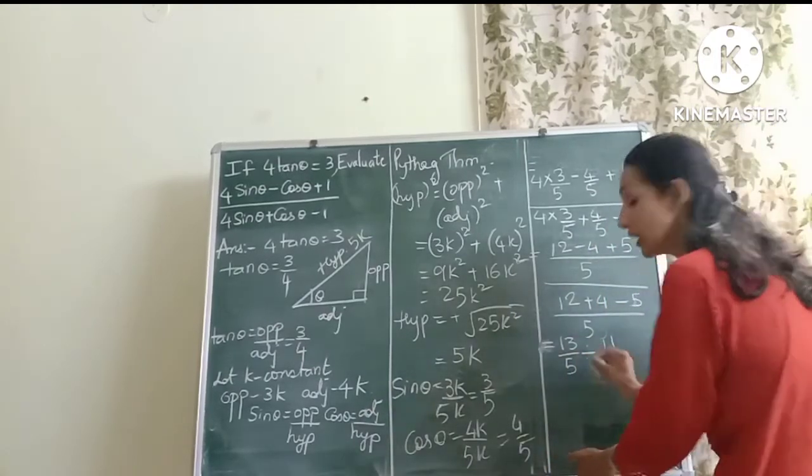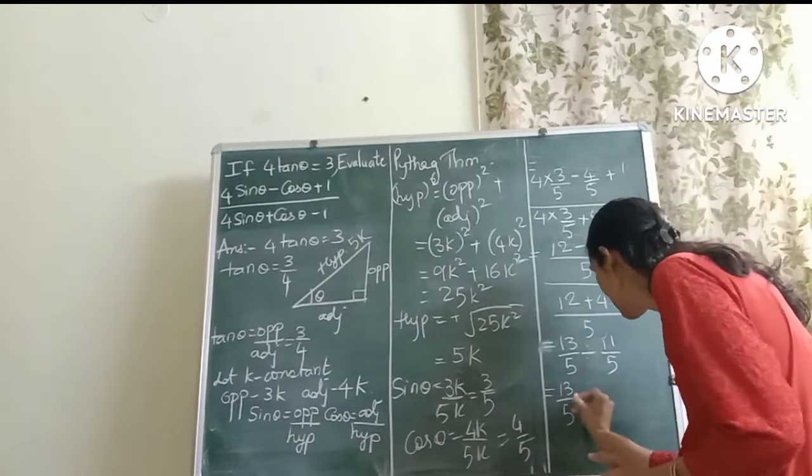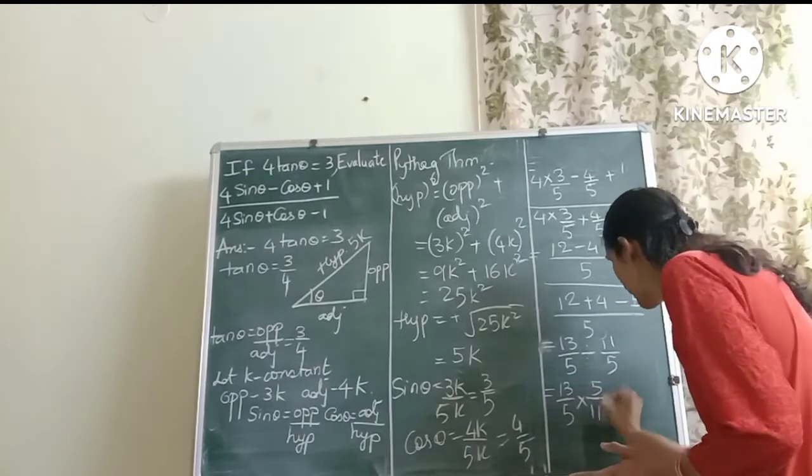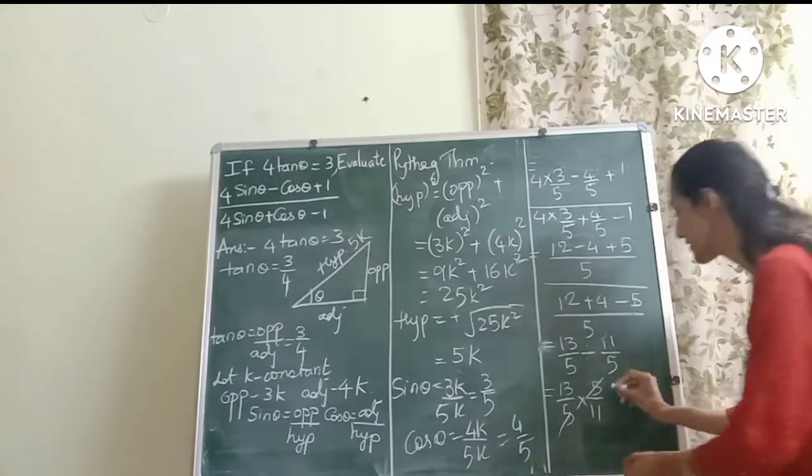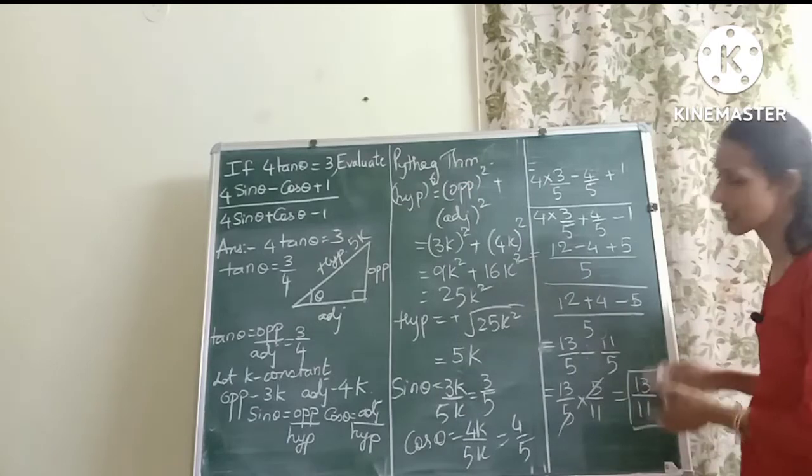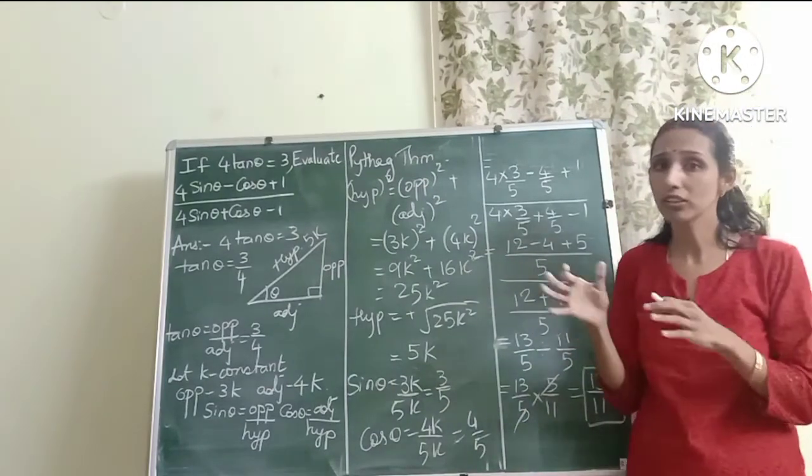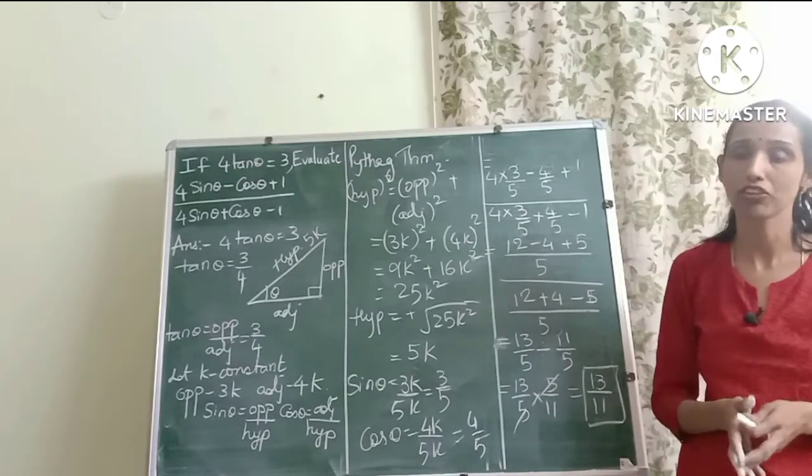So 12 minus 4 plus 5 will give me 13 by 5 divided by this will be 11 by 5. Okay, now let's reciprocate. That's the last step I'm going to do. Okay, so 5 and 5 gets cancelled and the answer is 13 by 11. That means the value of that expression is 13 by 11. So friends, I hope that you got a good idea of how to solve this type of question in trigonometry.